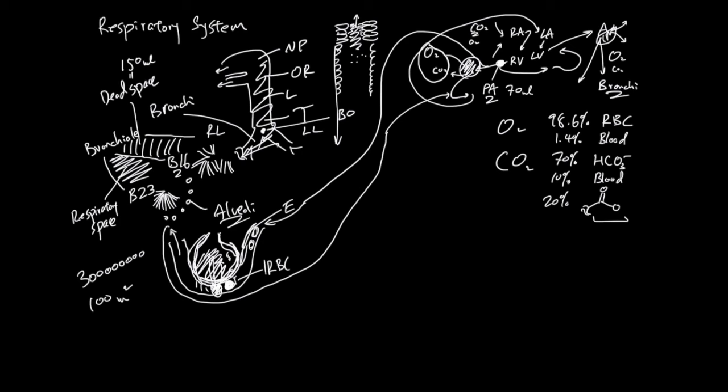And if you go even further down branch 16 all the way to branch 23, now these cells are non-cuboidal but squamous. So they're flat cells. Column blocks flat. Overall, the thickness of the structure gets thinner and thinner and thinner.